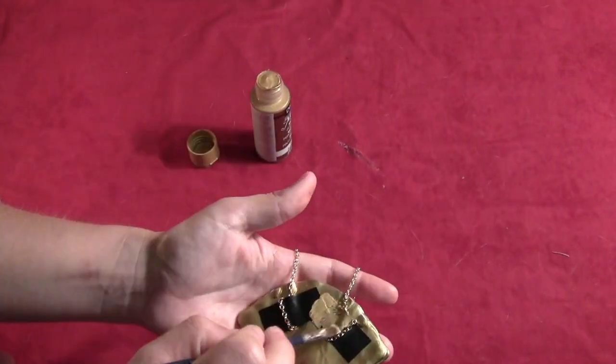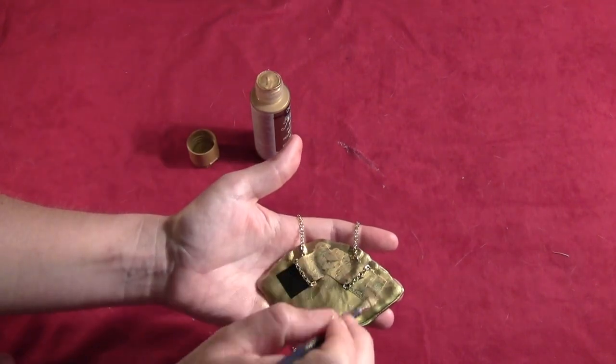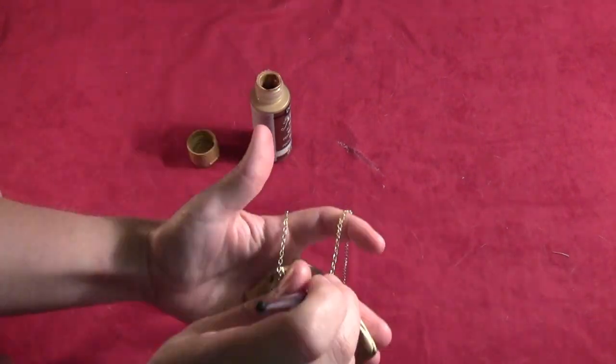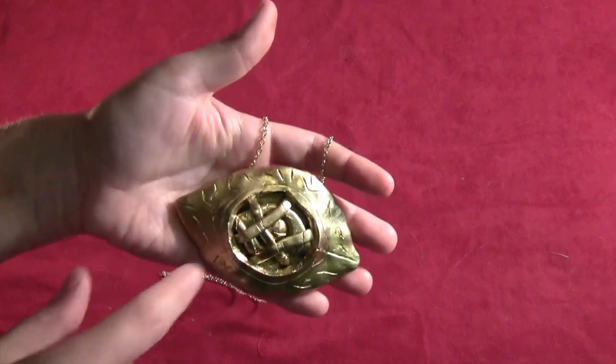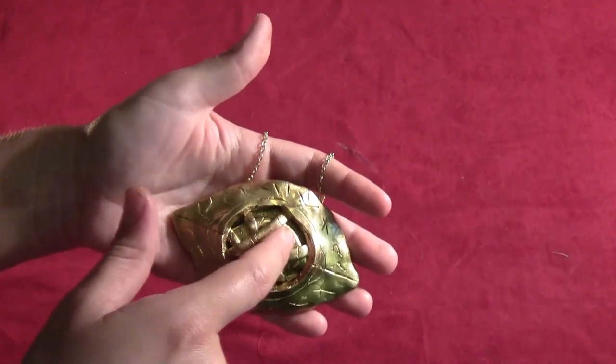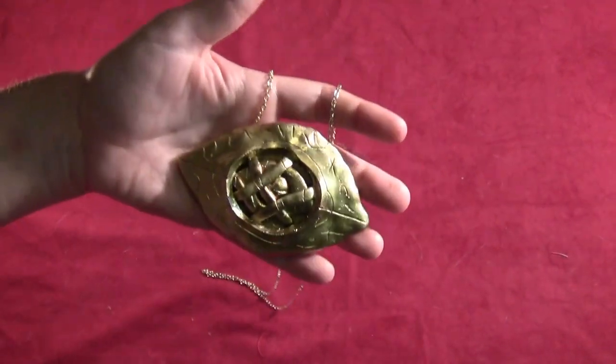So then I just took some gold paint and painted it over the tape so it would match the rest of the amulet. And then if you want to you can paint the center eye neon green to make it look more like it's lit and open but I just chose to leave mine closed.